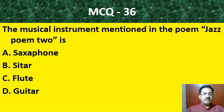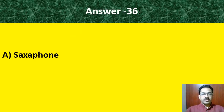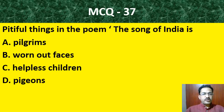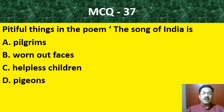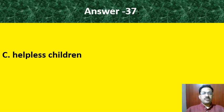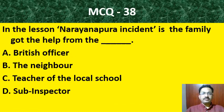MCQ 34: In the poem 'The Song of India,' 'swam' means — beggar, crowd, indicate, or leper. The answer is crowd. MCQ 35: Smitha's mother asked her to be silent because — her brother was ill and needed bed rest, girls are usually controlled, she did not like noise, or their aunt was strict. The correct answer is her brother was ill and needed bed rest.